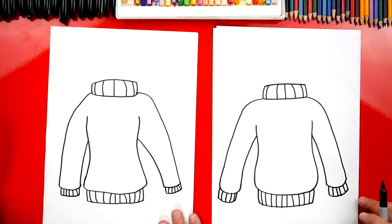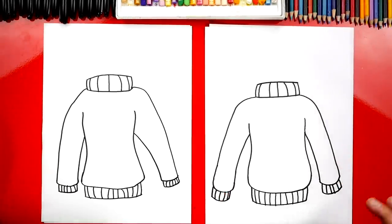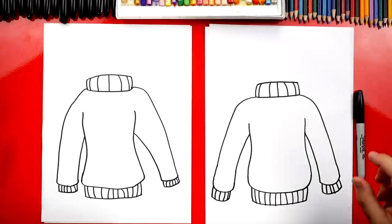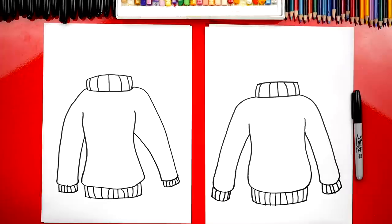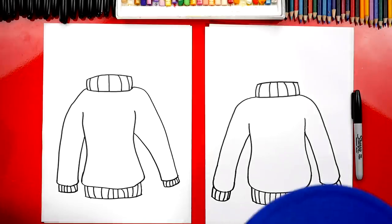Alright. We did it. We finished drawing our ugly sweater. It doesn't really look that ugly. It just looks like a regular sweater. What do we still need to do? Color it. Yeah. Now we need to color our sweaters. Now this part we're going to fast forward, but at the end, you guys can pause the video if you want to use our drawings as inspiration. You ready to fast forward?